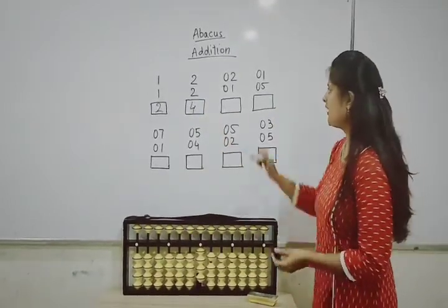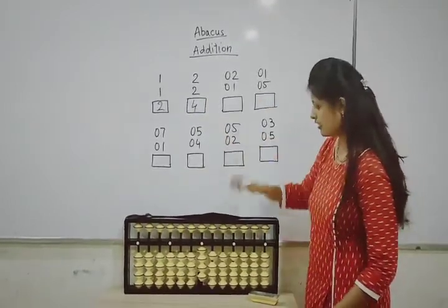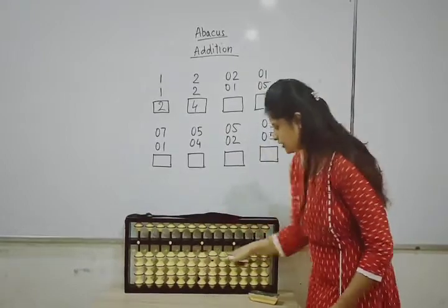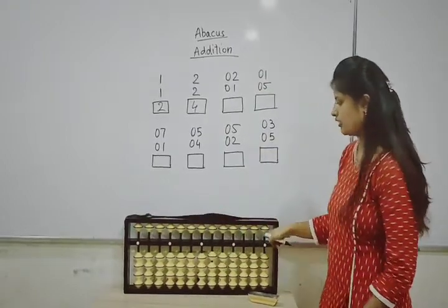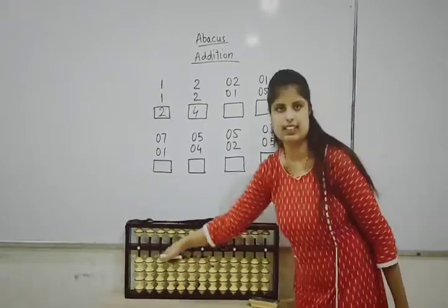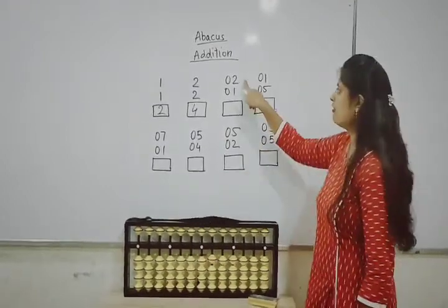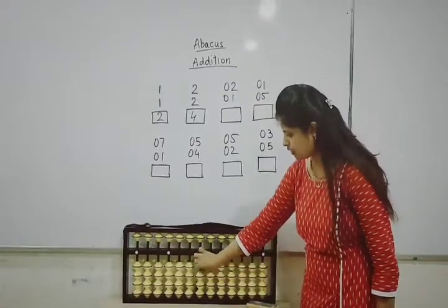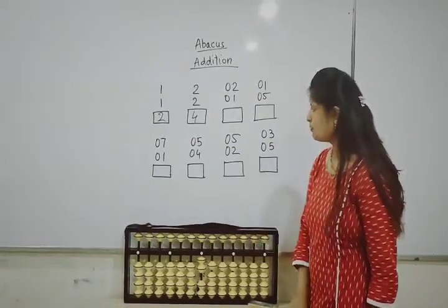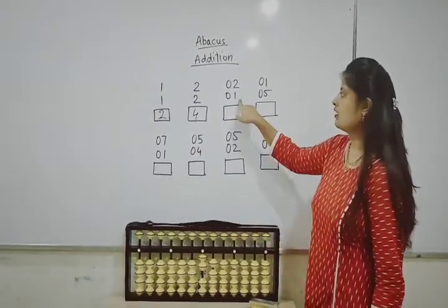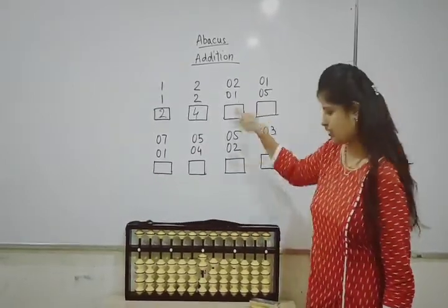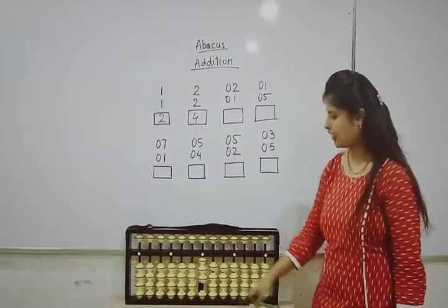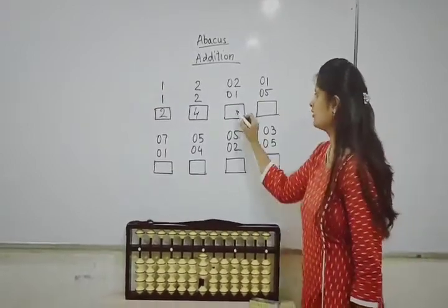Now next — first, clear the apparatus. Now the apparatus is clear. First number is two, that means two bits up. Then plus one, so one bit up. Now count: one, two, three — the answer is three.